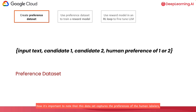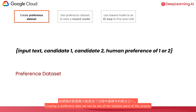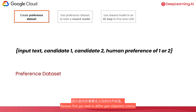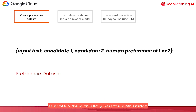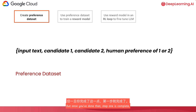It's important to note that this dataset captures the preferences of the human labelers, but not human preference in general. Creating a preference dataset can be one of the trickiest parts of this process, because first you need to define your alignment criteria — what are you trying to achieve by tuning? Do you want to make the model more useful, less toxic, more positive, etc.? You'll need to be clear on this so that you can provide specific instructions and choose the correct labelers for the task. Once you've done that, step one is complete.